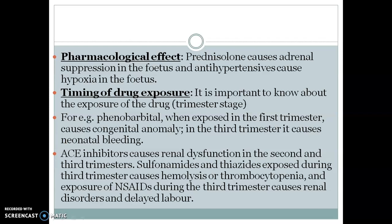ACE inhibitors, although a drug of choice for hypertension in general, are contraindicated during pregnancy as they cause renal dysfunction in the second and third trimesters. For gestational hypertension, alternatives like labetalol and methyldopa are used. Sulfonamides and thiazides exposed during the third trimester cause hemolysis or thrombocytopenia. NSAIDs exposed during the third trimester cause renal disorders and delayed labour, and are contraindicated during pregnancy.